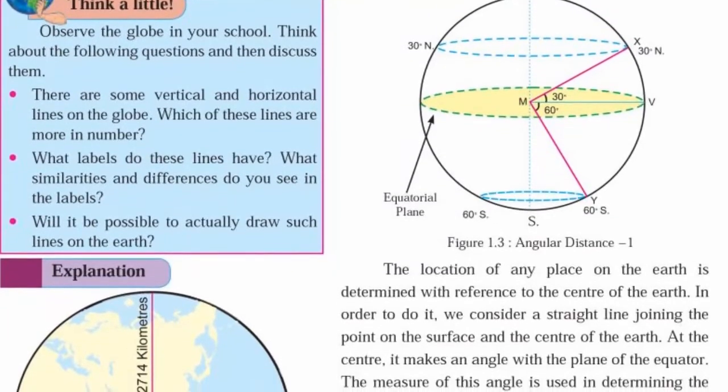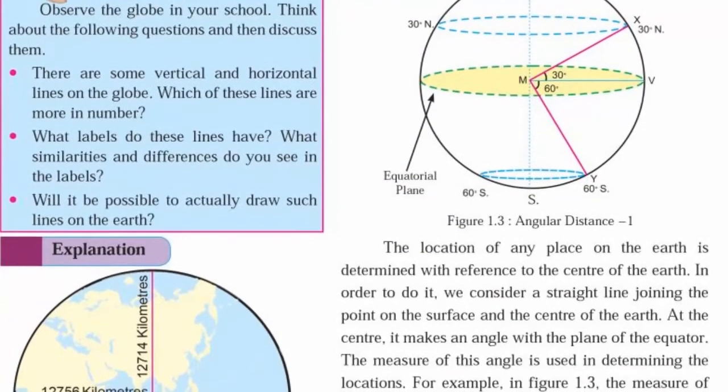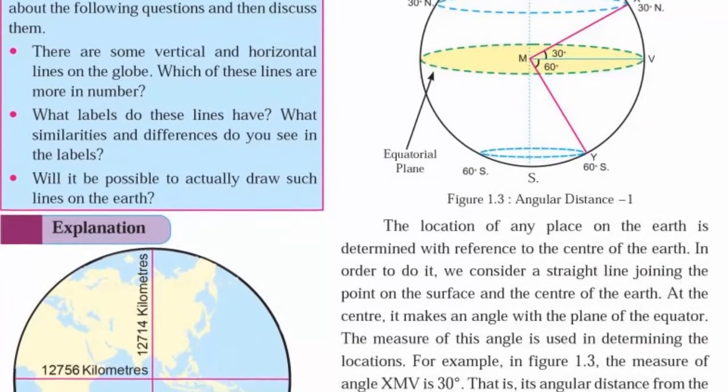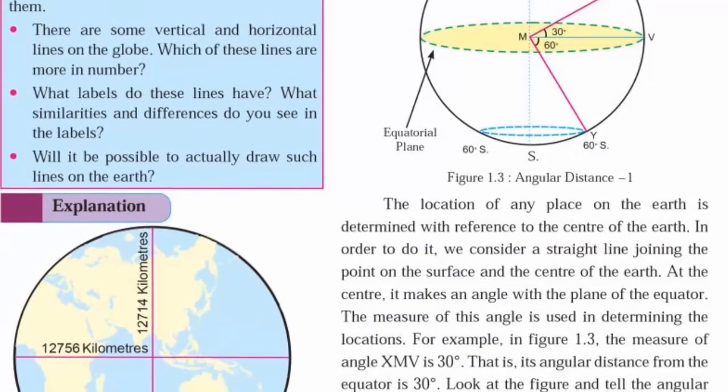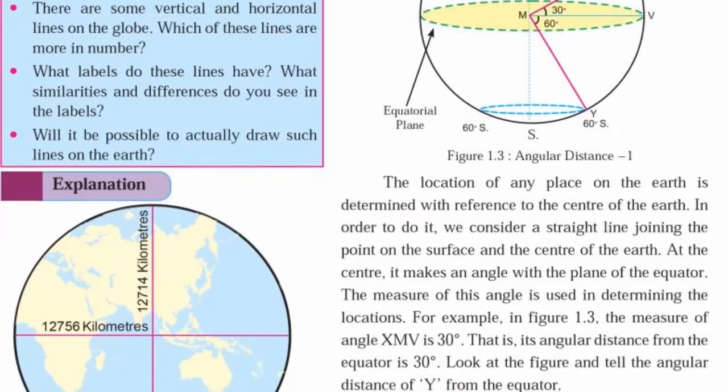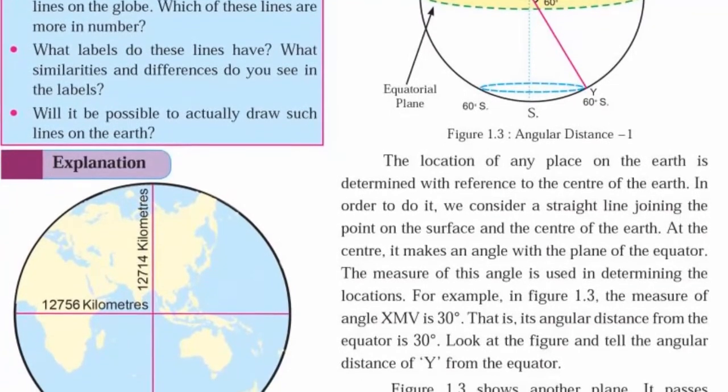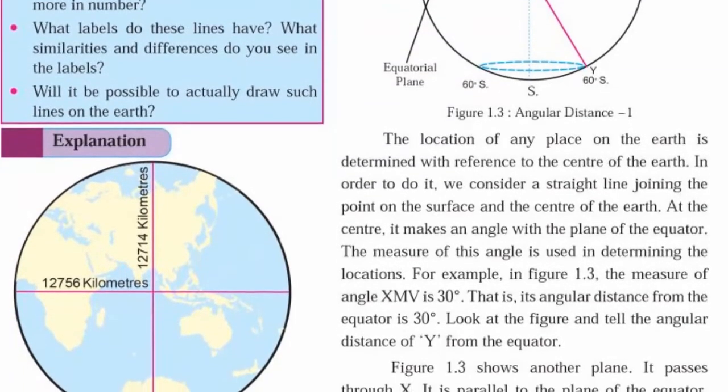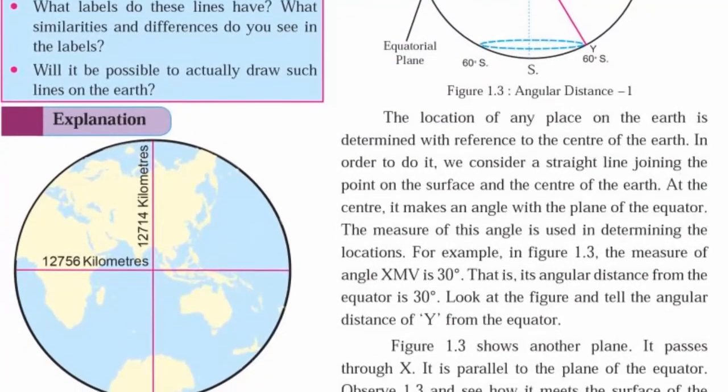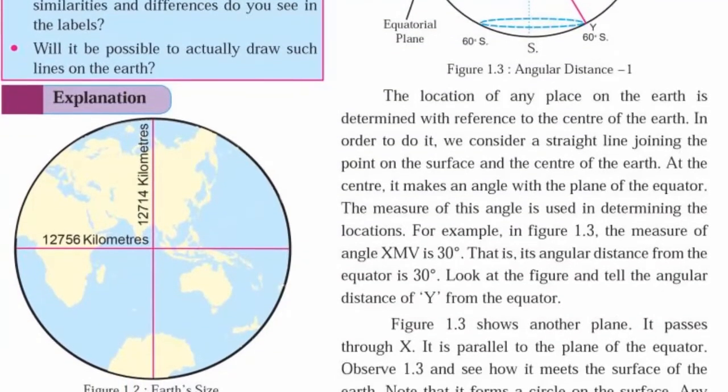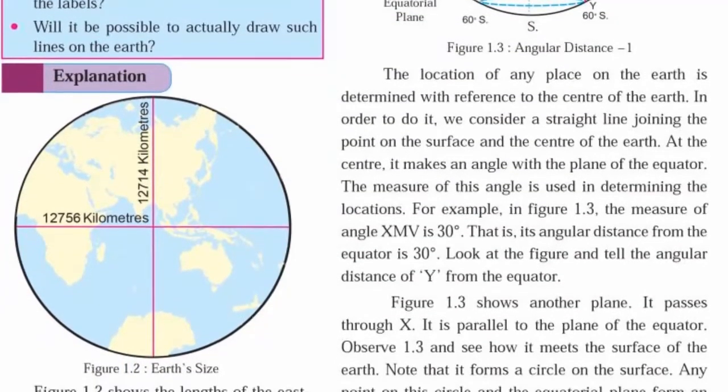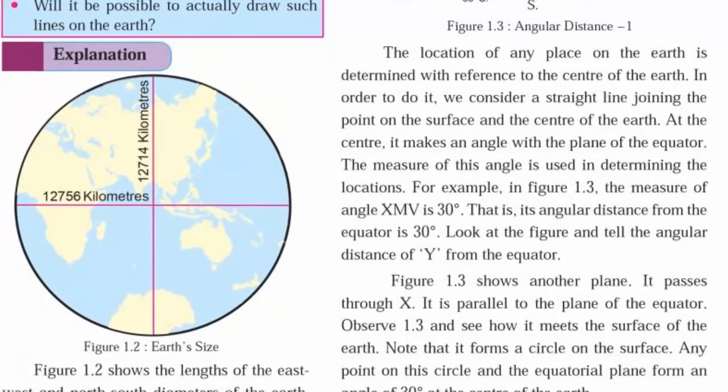Earth's size and making of a globe. The length of the east-west diameter of the earth is 12,756 kilometers and the length of the north-south diameter of the earth is 12,714 kilometers.